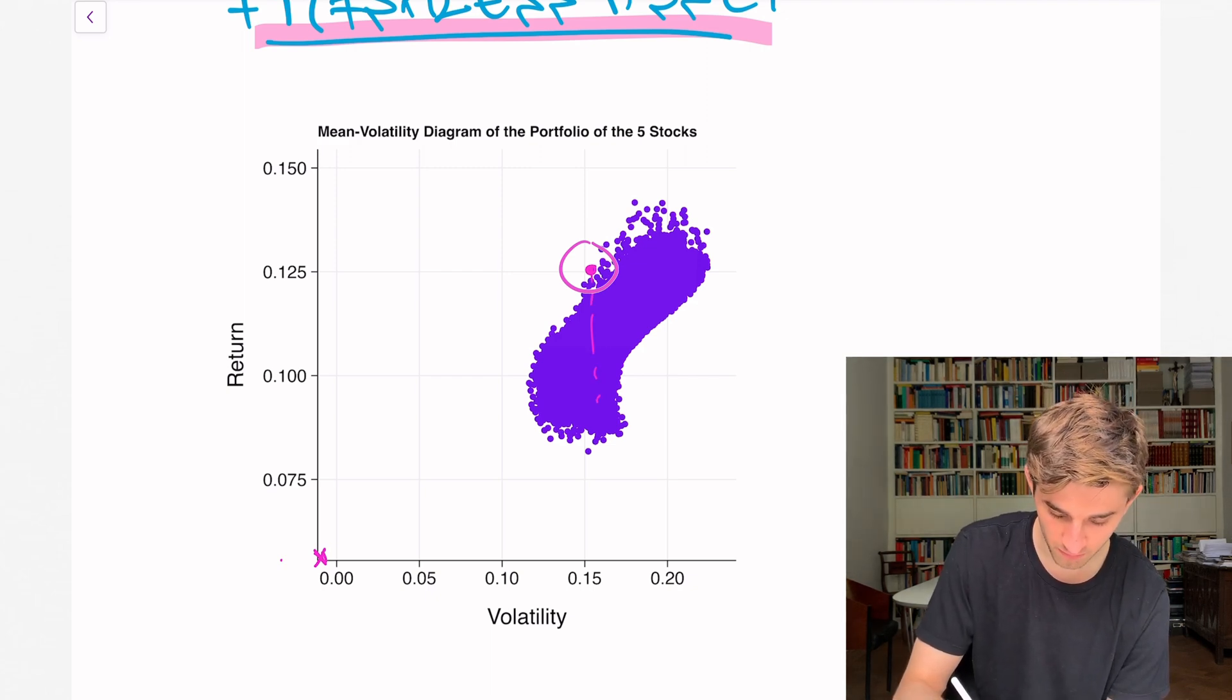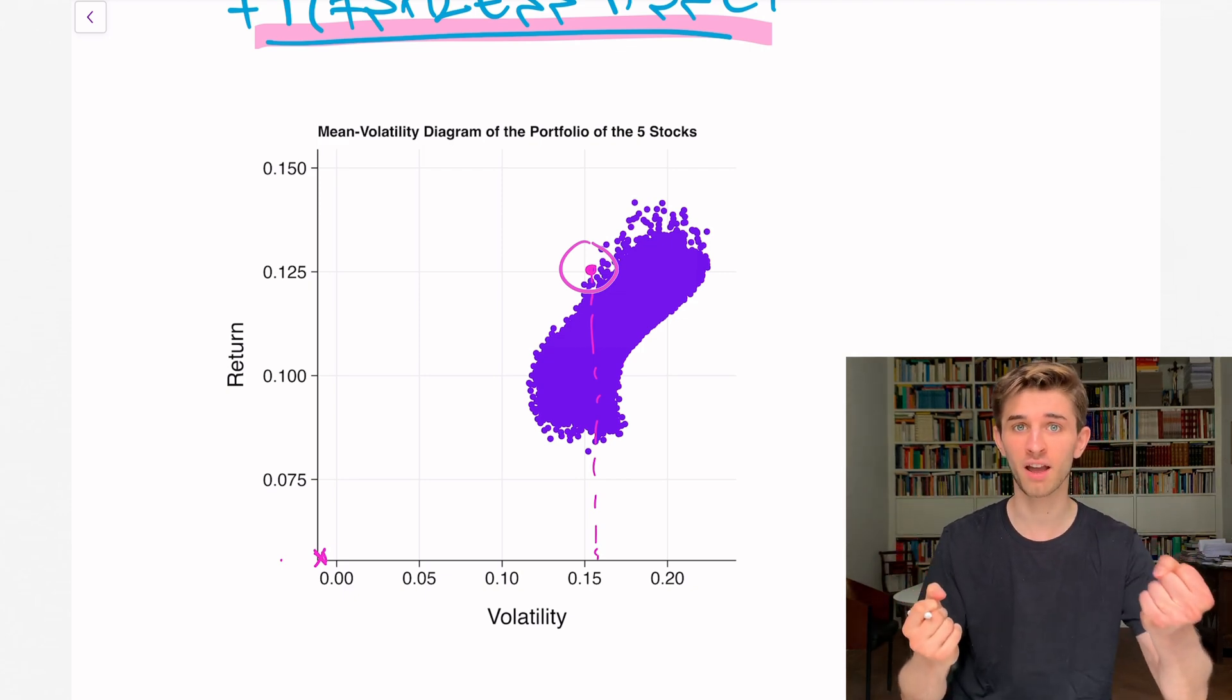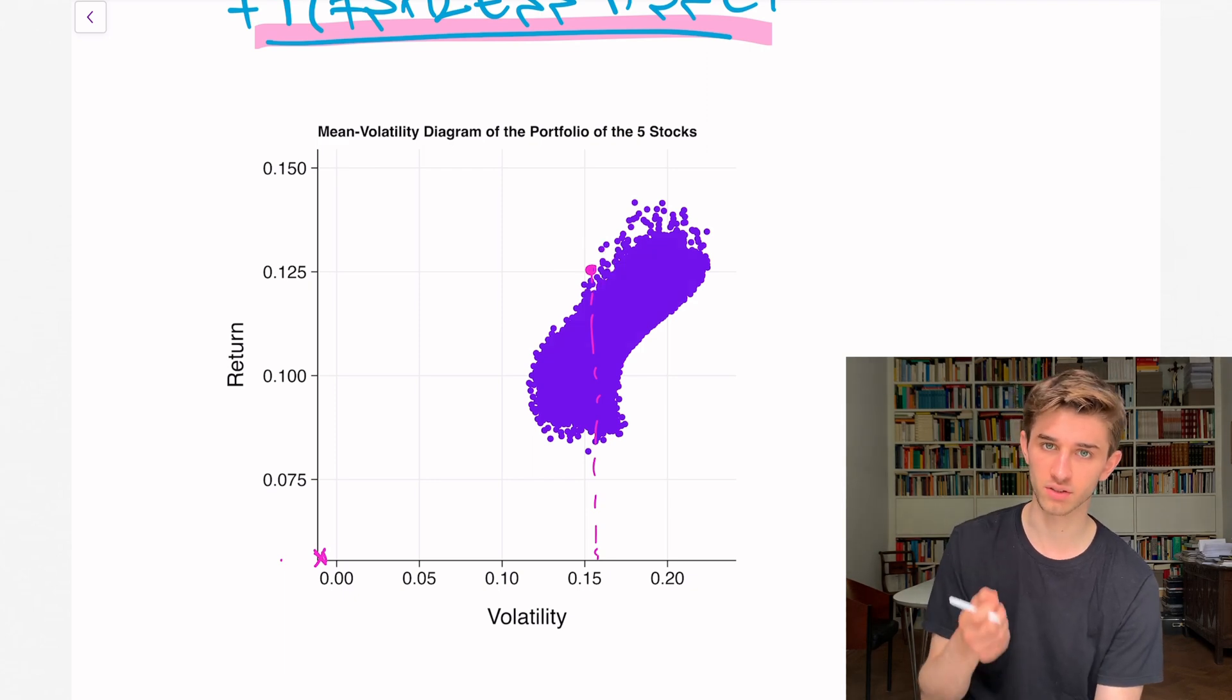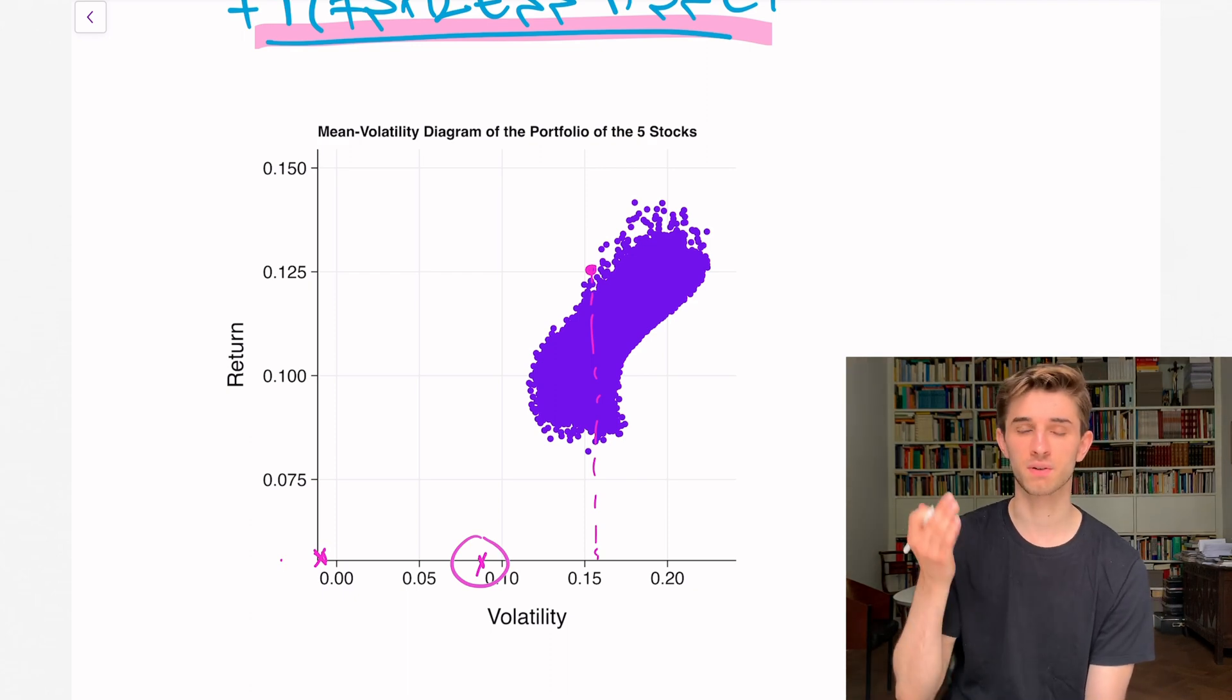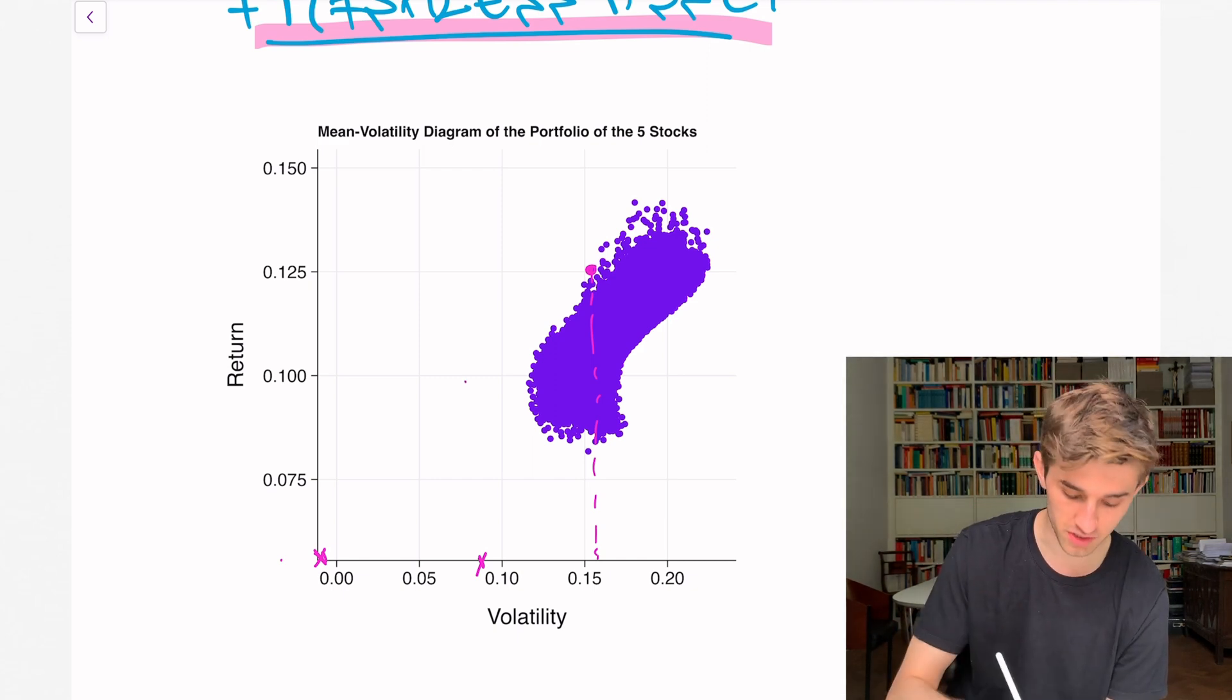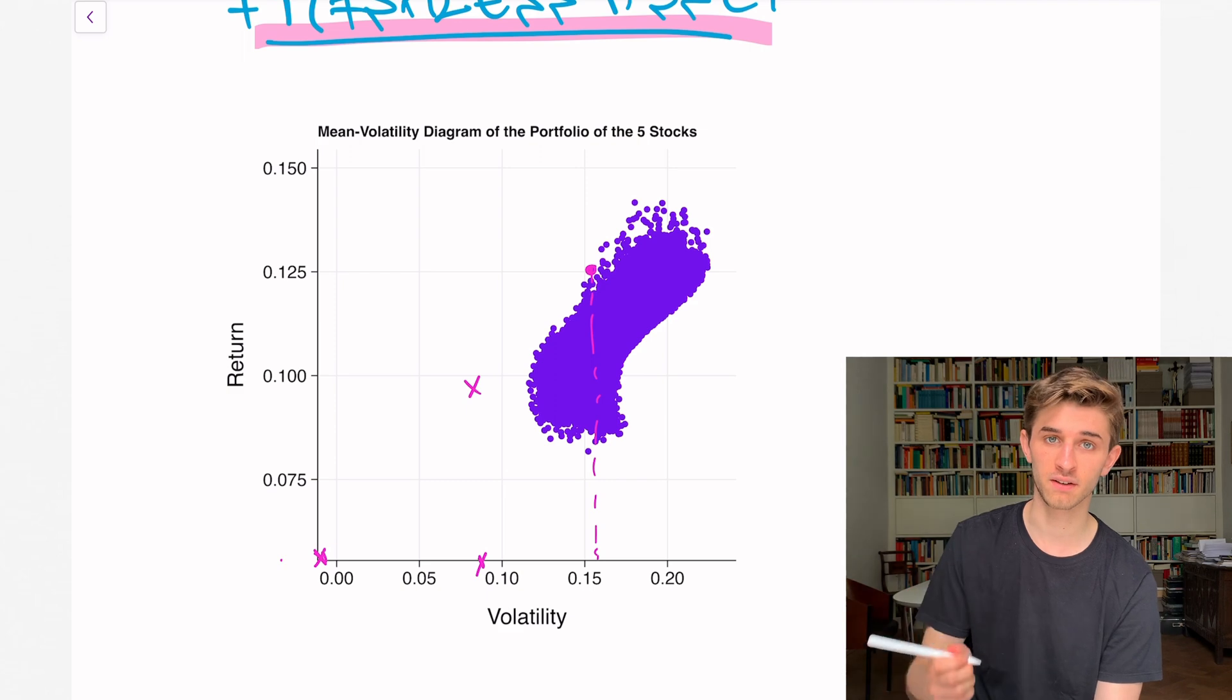Our overall position has half the volatility of the stock portfolio because we only invest half our money in the stocks, which has the volatility, but the other half is in the bond, which has zero volatility. So the overall volatility is exactly half. The stock portfolio has a volatility of about 0.16, so our overall position has a volatility of 0.08. The return is also exactly the average between the stock portfolio and our riskless bond. The stock portfolio has 12.5%, the bond has 6%, so it's roughly at 9%.